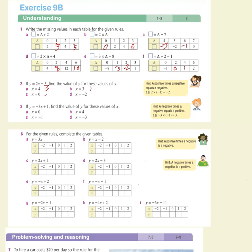For question 3, it's minus 3x plus 1. Minus 3 times 0 is 0, plus 1 is 1. Minus 3 times 4 is negative 12, plus 1 is negative 11. Negative 3 times negative 1 — a negative times a negative is a positive — so that gives 3 plus 1 equals 4. Negative 3 times negative 3 is positive 9, plus 1 makes 10.